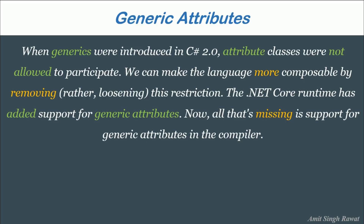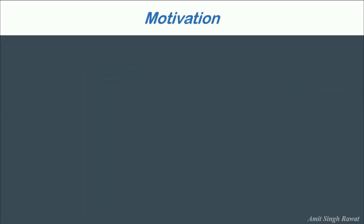Microsoft added that we can make the language more composable by removing this restriction. The .NET Core runtime has already added support for generic attributes. Now, all that was missing was support for generic attributes in the compiler.